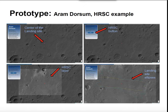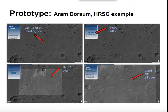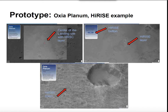If you keep moving through the story, we arrive at the Aramdorsum site. Through the story container, we guide the user to click the button to add the HRSC layer, and to see the difference between the MOLA layer and the HRSC layer.